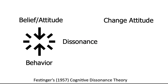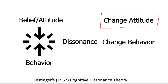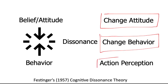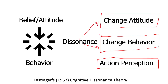We have basically three ways to reduce dissonance. We can change our attitude, we can change our behavior — for example, stop smoking — or we can change the action perception, saying something like, I only came along to this hazing induction because I was asked by that person. Often, changing the action perception isn't really possible, so we have to trade off between changing our attitude or changing our behavior. Festinger says more often than not we go with the least effort, and changing our attitude is much, much easier than changing our behavior.